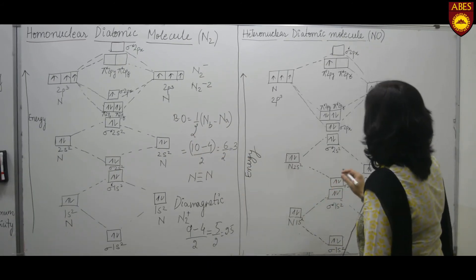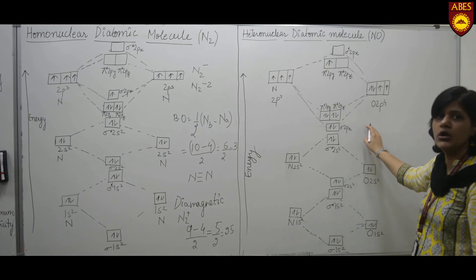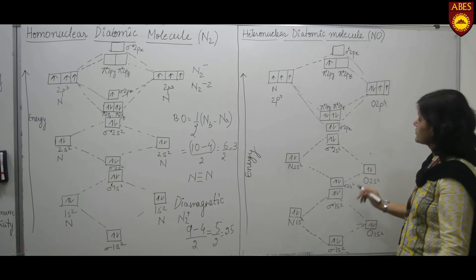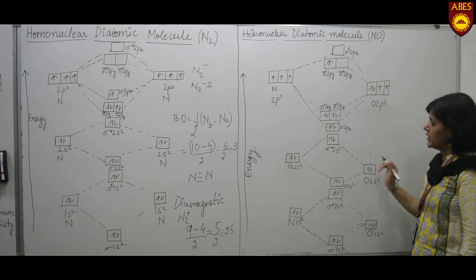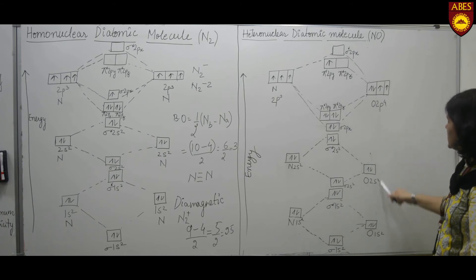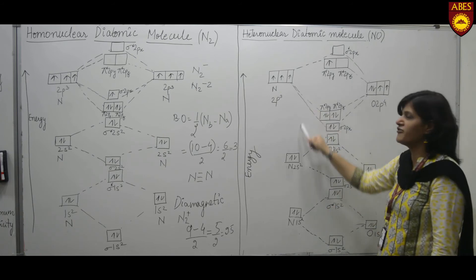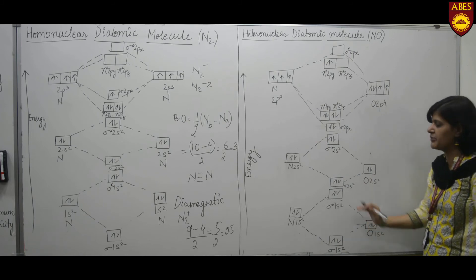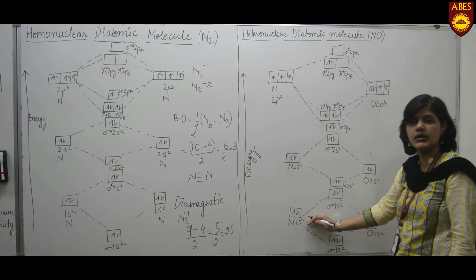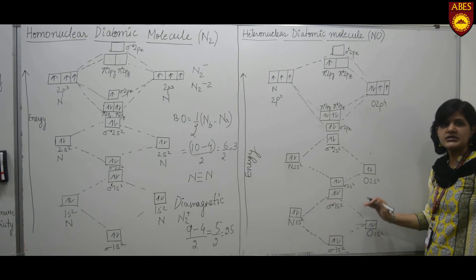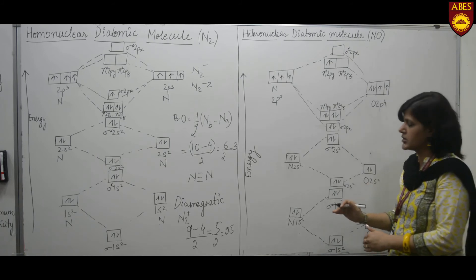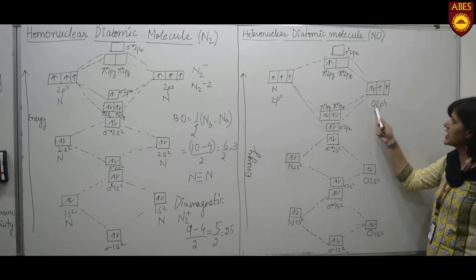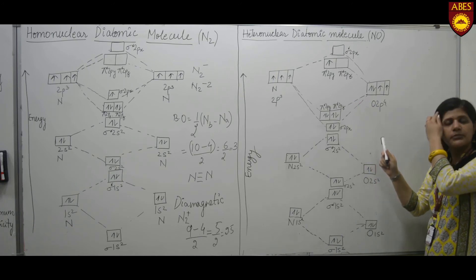Now let's discuss the formation of a heteronuclear diatomic molecule on the basis of molecular orbital theory. I am discussing the case of NO molecule, nitric oxide. Here I have drawn the orbitals of the oxygen atom and the orbitals of the nitrogen atom. Orbitals of the oxygen atom are slightly lower in energy compared to the nitrogen atom, because the more electronegative atom has lower energy orbitals. So oxygen orbitals are drawn with slightly lower energy than nitrogen orbitals.